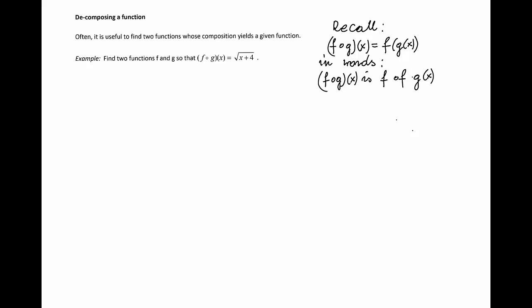The assumption is that those other functions are not identity functions. So in the example that we have here, we need to find two functions f and g so that the composition of those two functions is square root of x plus 4.